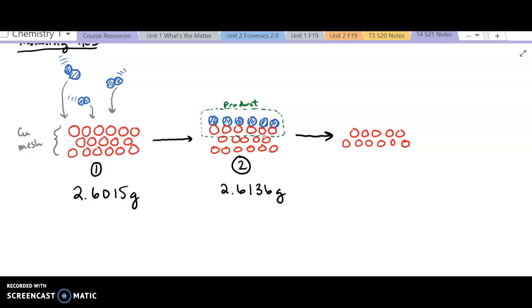Then, final step, we washed off all of our product, leaving behind only unreacted copper. That's going to be this third column in our data table that we collected earlier last week. And let's say in that case that the mass happened to be 2.5958 grams.